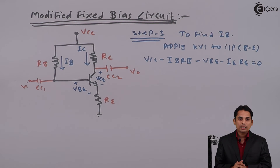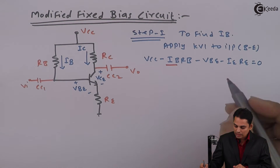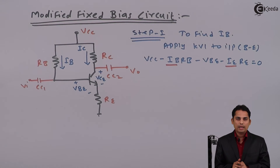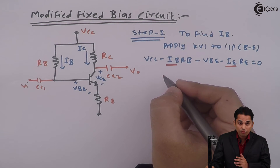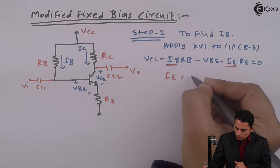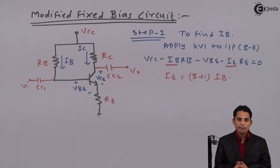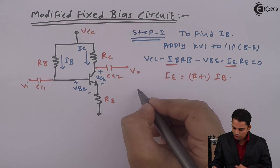Now there is a problem. In the input side there are two currents — one is base current IB and another is emitter current IE. This is a problem because we need to find only the base current. So we will try to eliminate emitter current IE. We know that IE equals (β + 1) times IB. This is the relationship between emitter current and base current. We will replace IE by (β + 1)·IB.